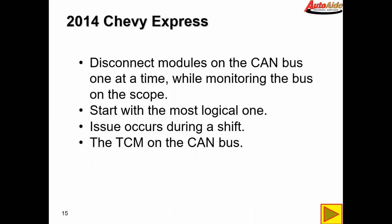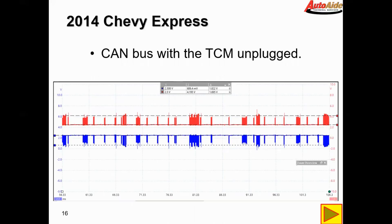We're going to start with the most logical one. We know the issue occurs during a shift, so the most logical module to start with is the TCM, which is on the CAN bus on this vehicle. This is the CAN bus with the TCM unplugged — and it looks like the TCM is our issue. With it unplugged, everything communicates normally. You shift and everything looks fine — no lights come on on the dash. You have no communication with the transmission so there's an engine light on, but none of the ABS lights or warning chimes are coming on, and I can continue to communicate with every module on the bus while shifting and while in park, neutral, and reverse.